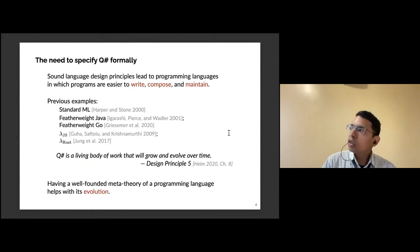Why do we even need to specify QSharp? It's well known in the programming languages community that if you have a good foundation for a language, you can easily write and maintain programs in it. There are several examples of this being formalized: Standard ML, Java, JavaScript, and Rust. QSharp is a new and evolving language, and there's a design principle from Bettina Heim's thesis saying it's a living body of work which will grow. Having a well-founded meta-theory will help it evolve.